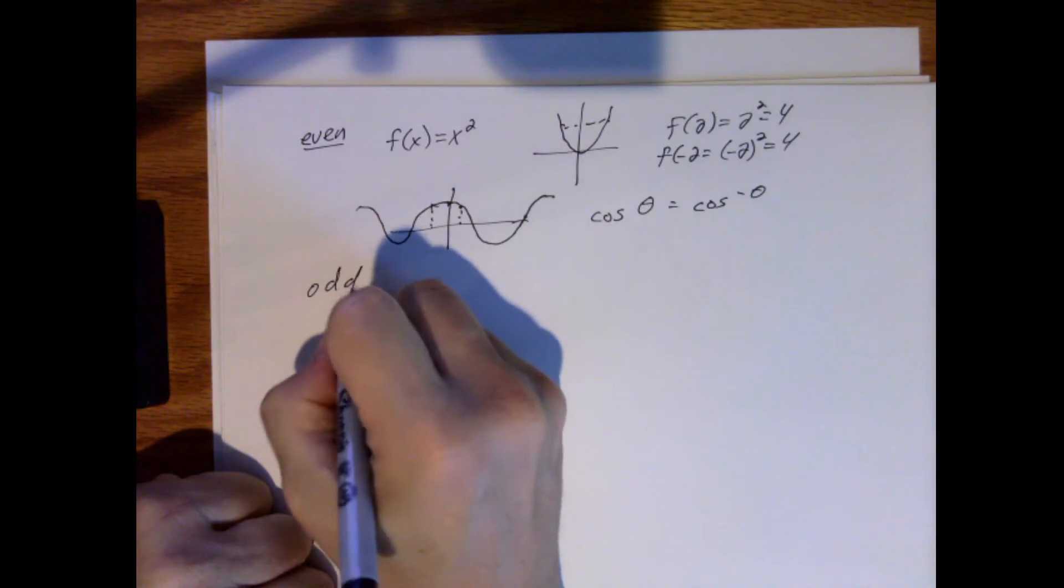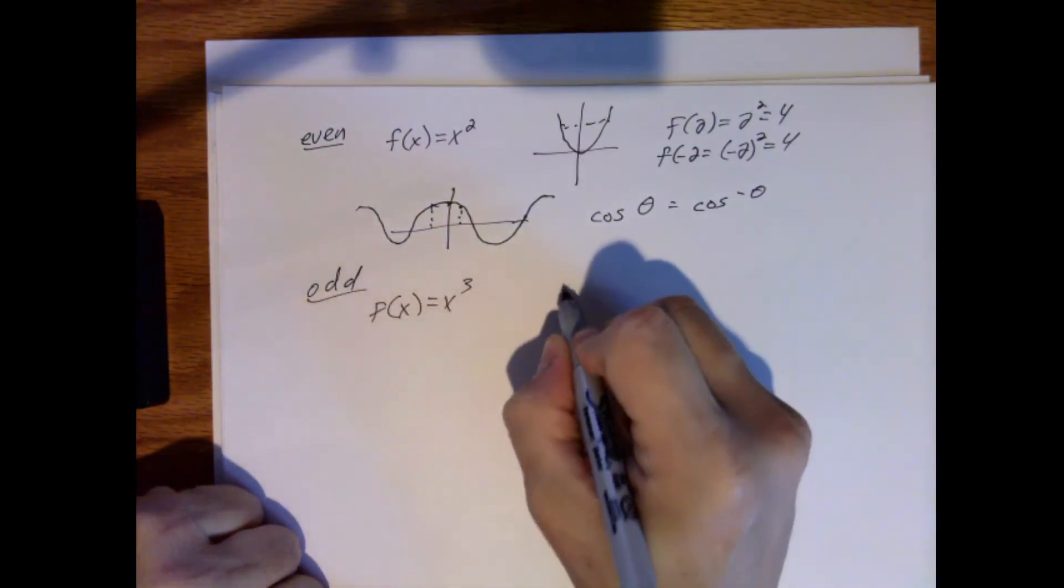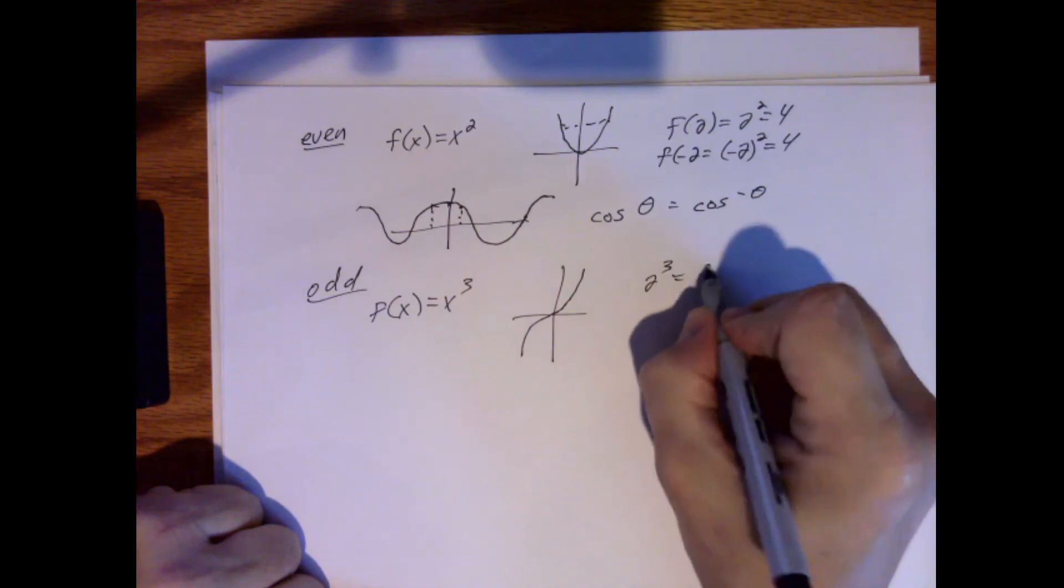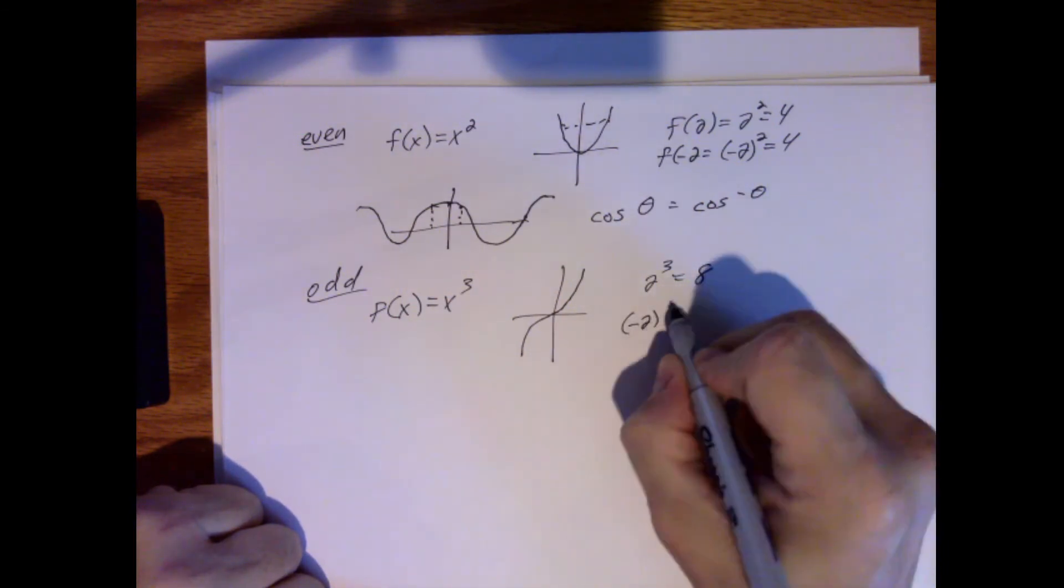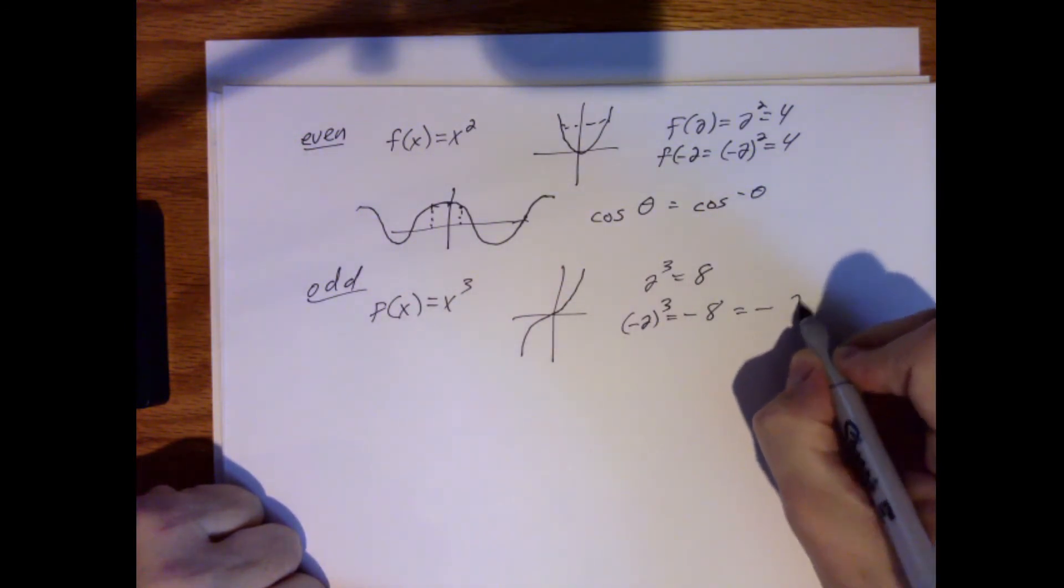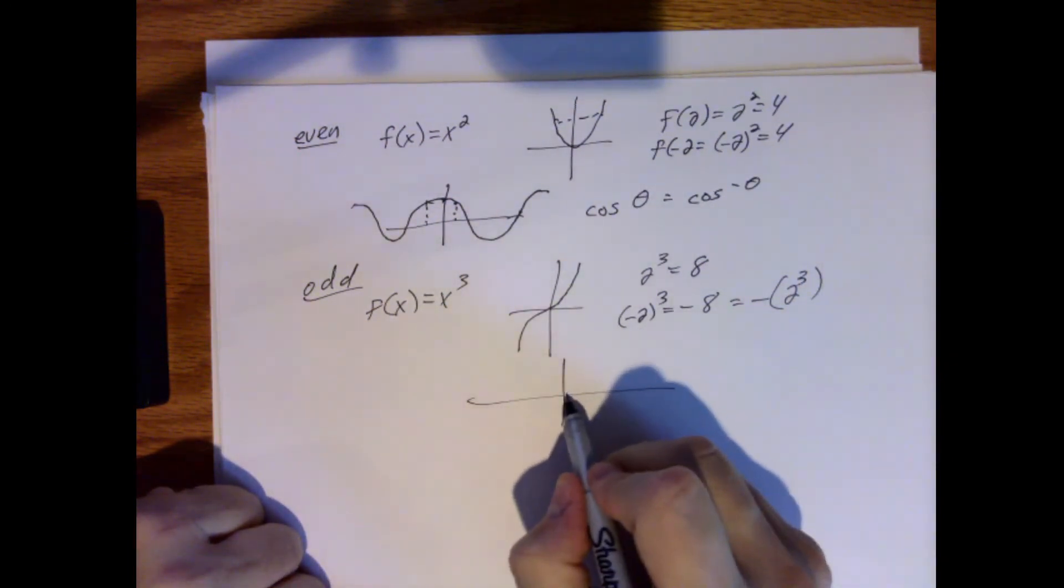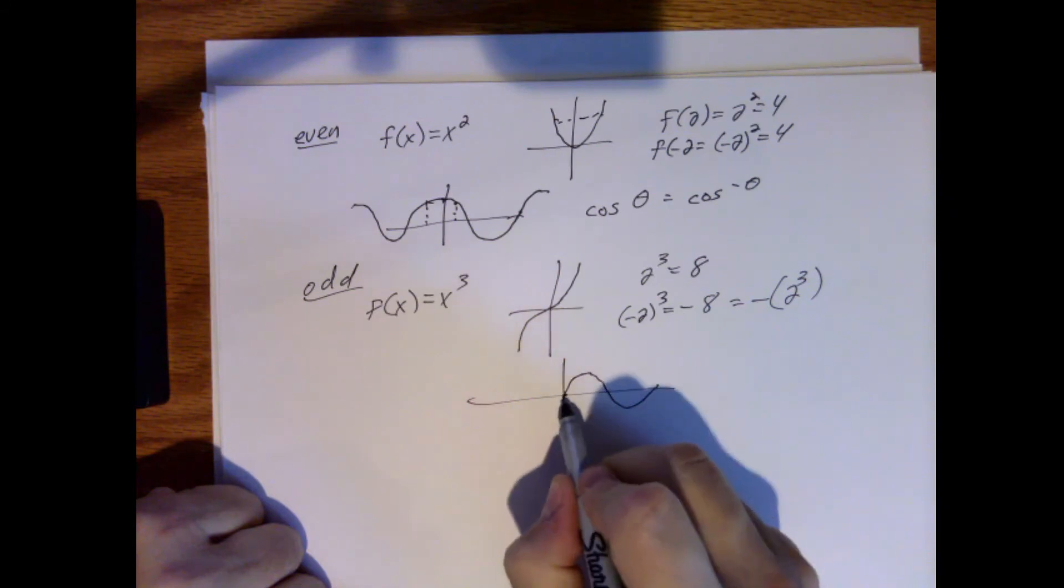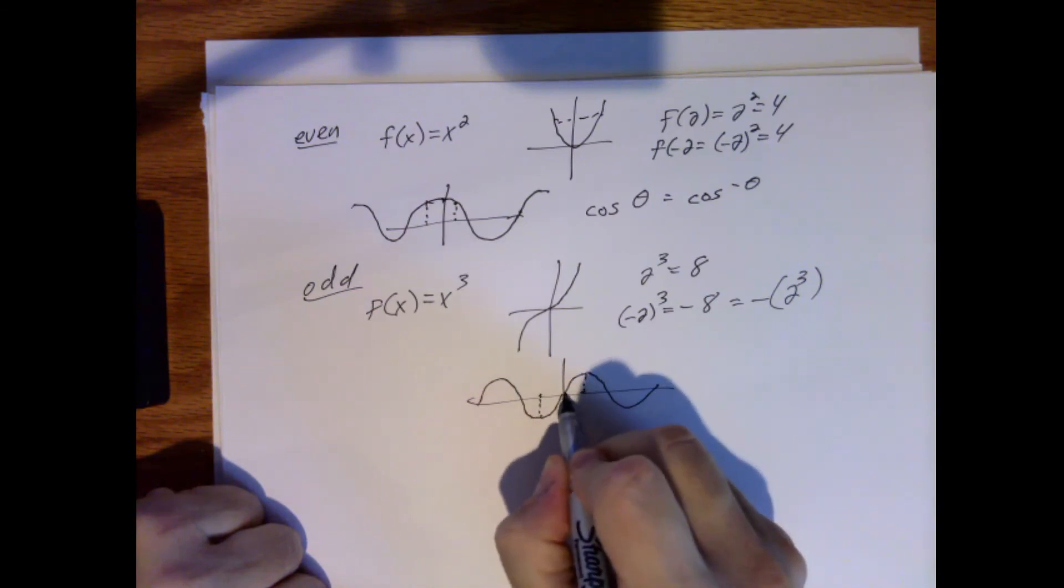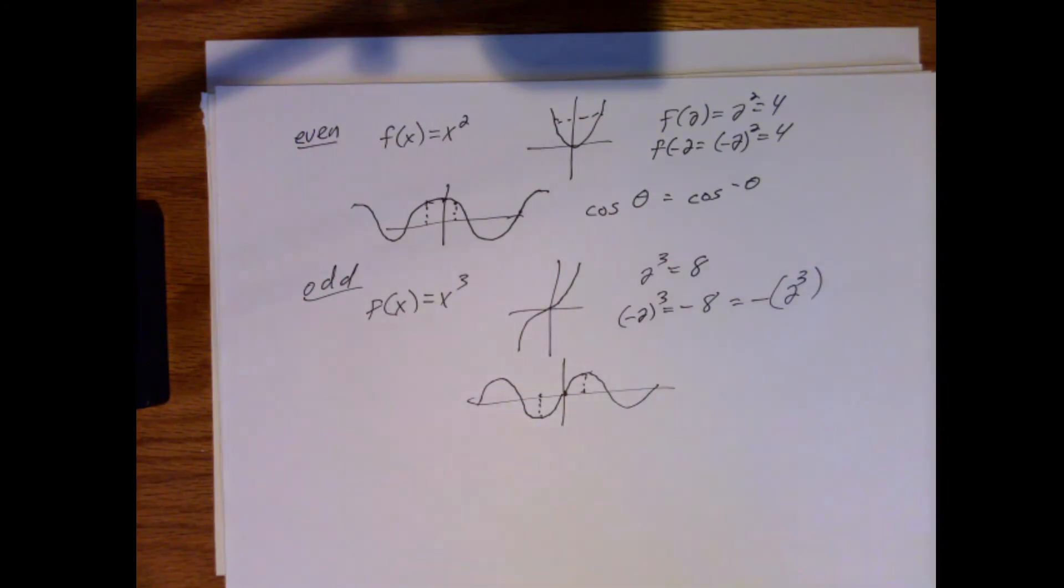And then a common example for an odd function would be F of X is equal to X cubed, which looks like this. So 2 cubed is equal to 8, and minus 2 cubed is equal to minus 8, which is equal to minus 2 cubed. So sine has that symmetrical property as well. If I come to this point, or this point, which is the same distance from the origin, I just change the sign.